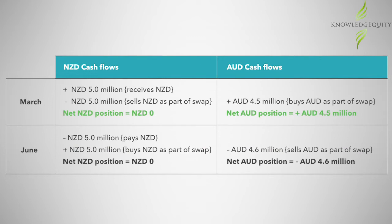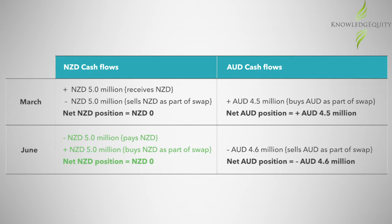As can be noted from the table, the net New Zealand dollar position is nil, as the receipt of the 5 million New Zealand dollars is offset by the FX swap which sells the 5 million New Zealand dollars in March at the spot rate. This results in a net cash of 4.5 million Australian dollars. The payment of 5 million New Zealand dollars is again offset by the purchase of 5 million New Zealand dollars as part of the swap, resulting in a nil New Zealand dollar position. It also results in a net Australian dollar cash outflow of 4.6 million, which is used to make the June New Zealand dollar payment upon conversion using the June forward rate.